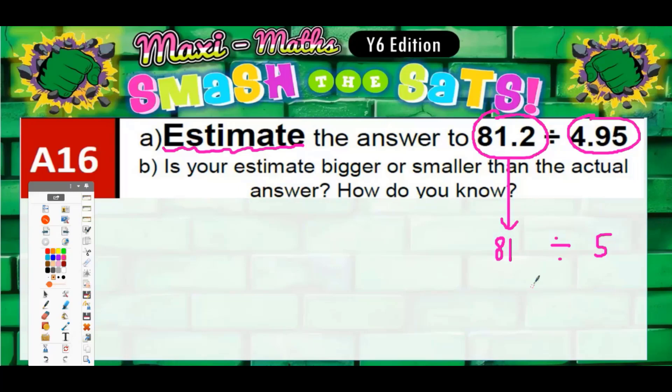To the nearest 10 it would just be 80. 80 divided by 5 - well, 80 divided by 5 we can do pretty easily. So 5 into 8 is 1 remainder 3, and 5 into 30 is 6. So a good estimate would be 16.